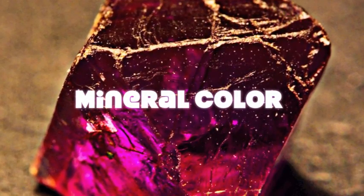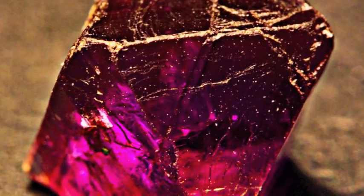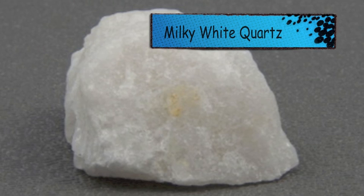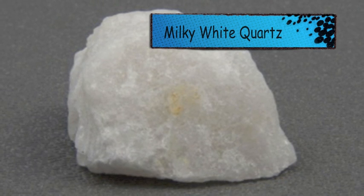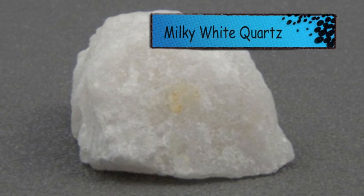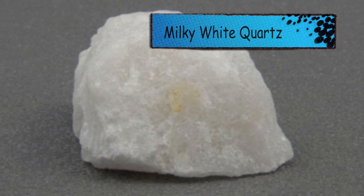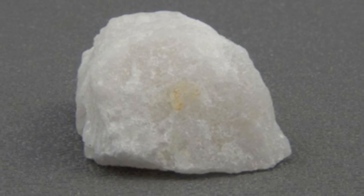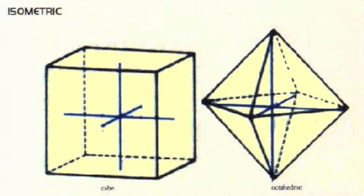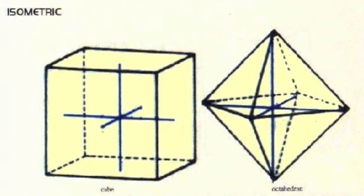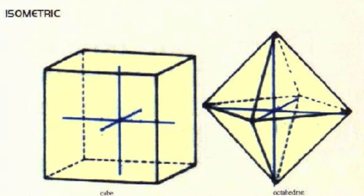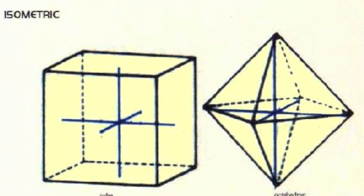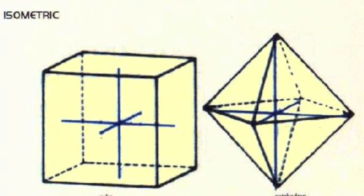A crystal's color is determined by the elements it contains. Quartz can be transparent, milky white, pink, or purple when it has a lot of iron in it. The shape of the crystals depends on the way the elements group themselves together, and crystals grow in orderly geometric shapes.